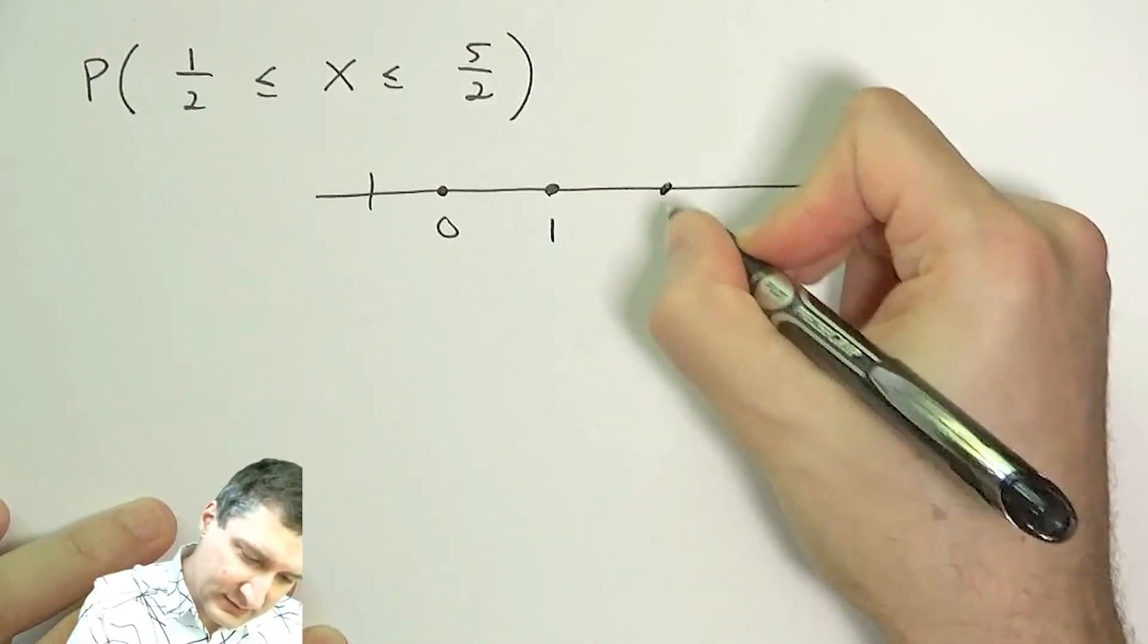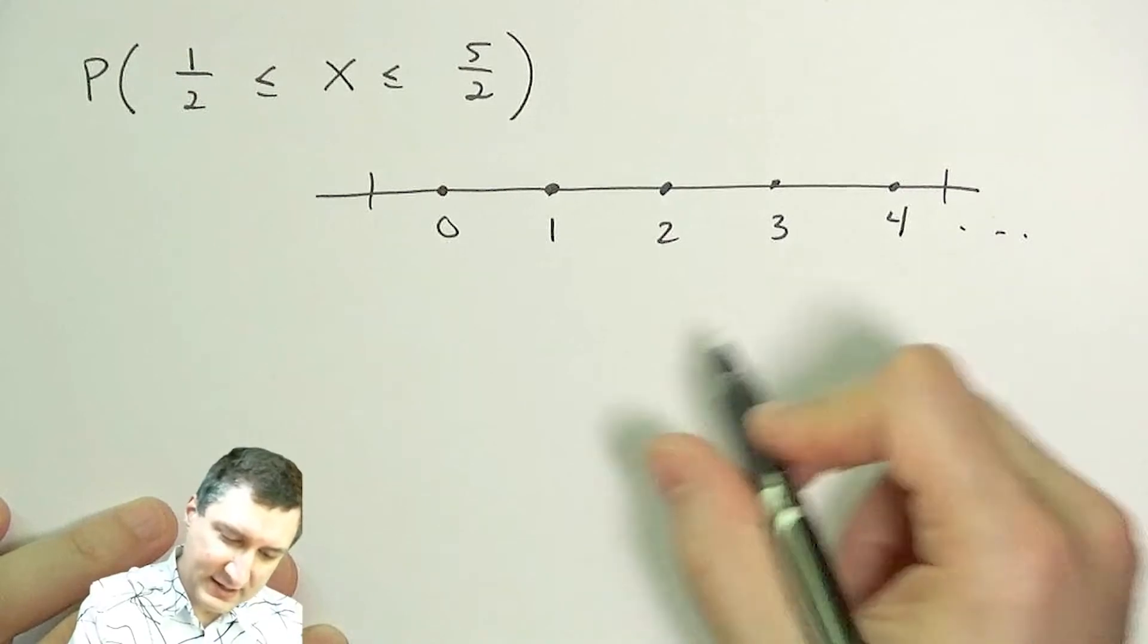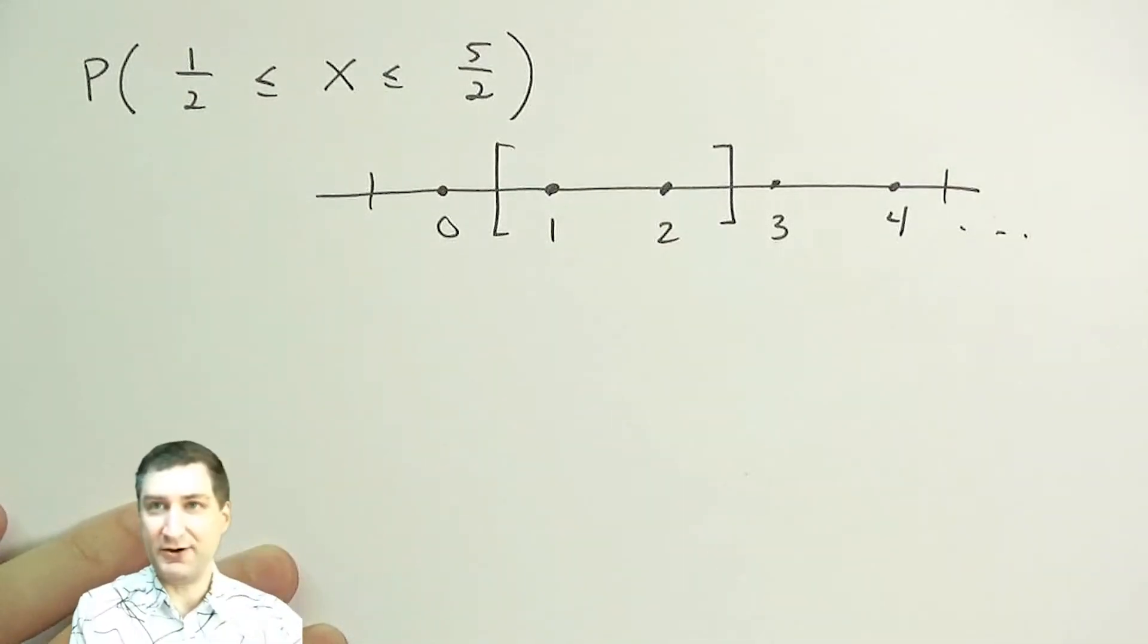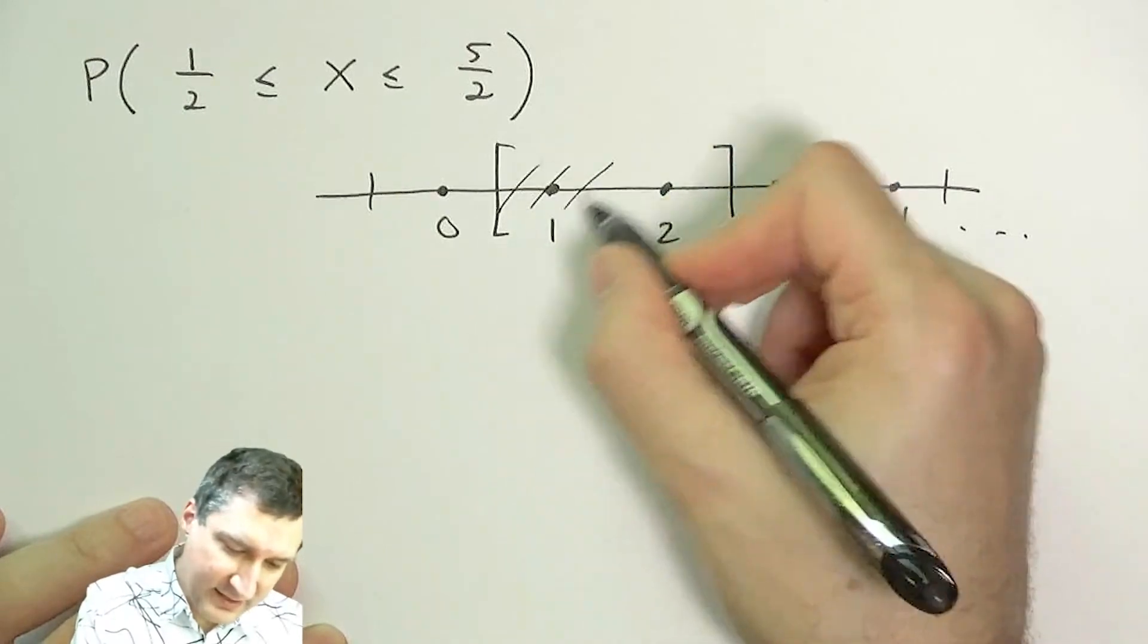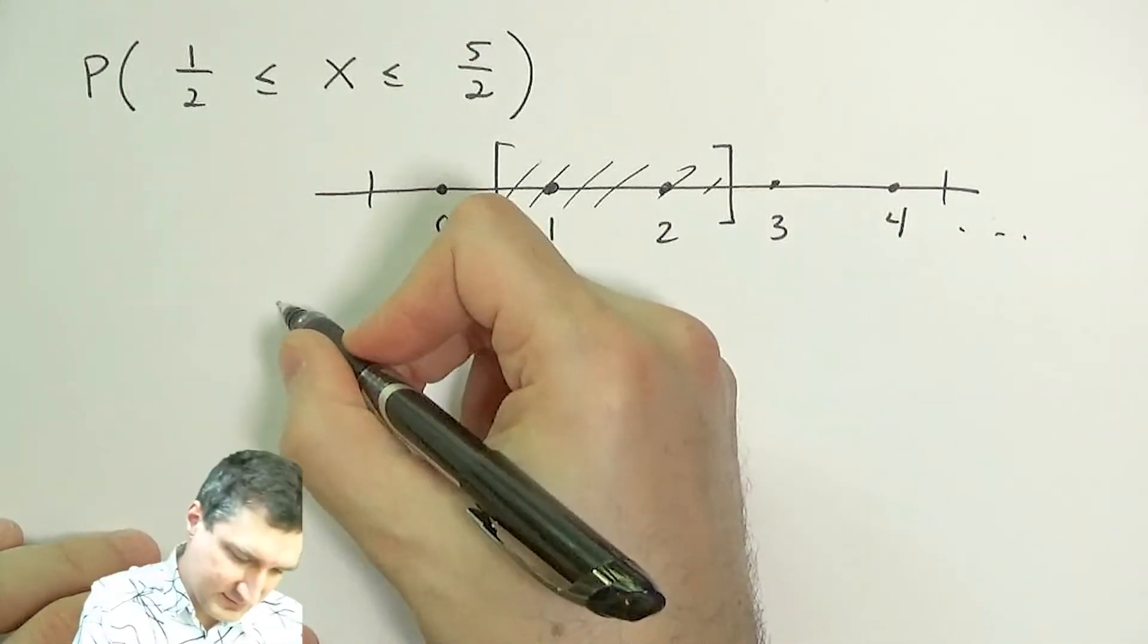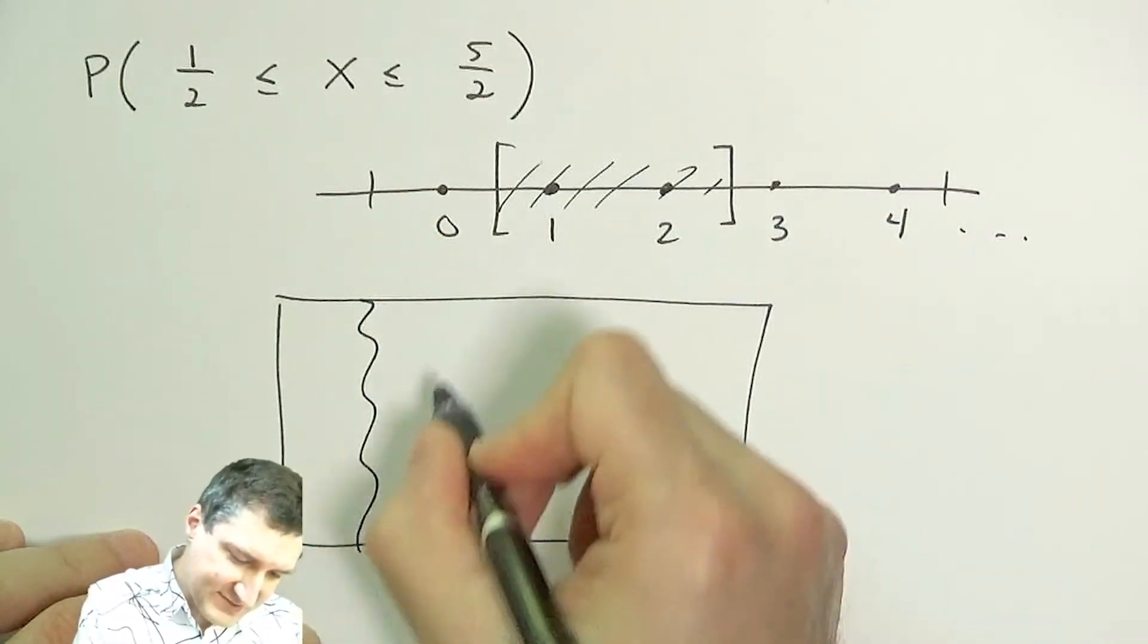Well, I look at the real line, I look at, for example, the possible outcomes of X. I say, okay, here's my range that I'm asking about for the random variable. That corresponds to, in this case, a couple of discrete random variable values.